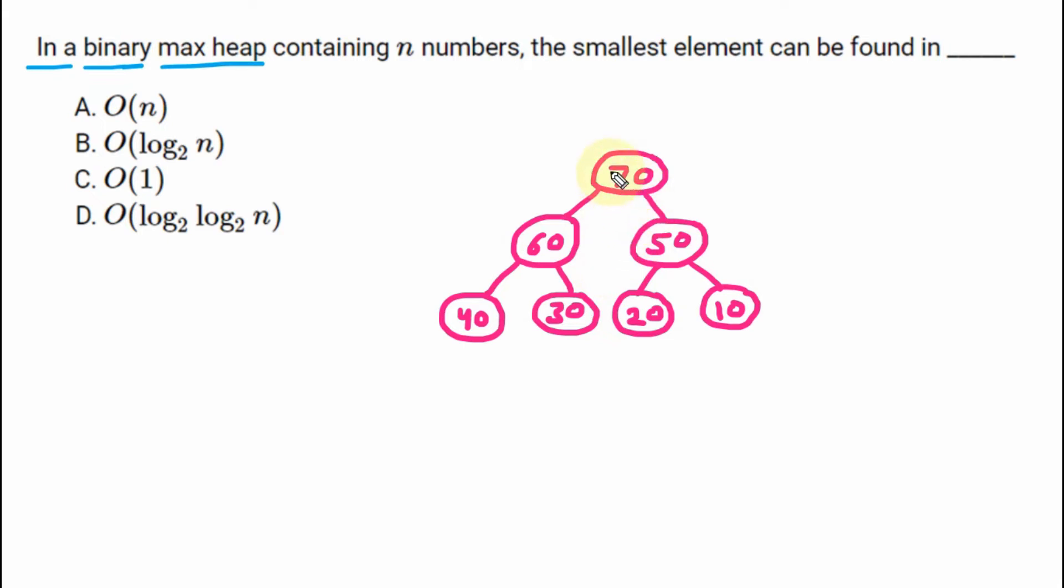So here we can see that in a max heap, all of the numbers, we have the largest number, which is 70, that is on the top, on the first level. Then afterward, second to largest element. We can see that out of remaining, 50 and 60 are on second level. Then on the last level, we are having the remaining elements. So this is called the max heap.